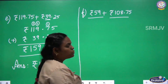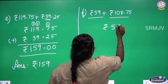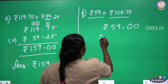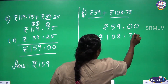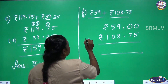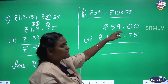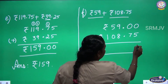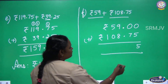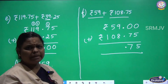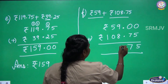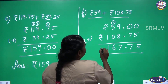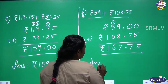Next: 59 Rupees and 108 Rupees 75 Paise. Here they have given only 59 Rupees, no Paise, so write 59.00. Next, 108.75 Paise. We are going to add — write the Plus symbol. Here only Rupees, no Paise, so write 00. What is 0 plus 5? 5. 0 plus 7 is 7. Put the dot. 9 plus 8 is 17 — write 7, 1 carry over. 5 plus 1 is 6, 6 plus 0 is 6, then 1. Write the Rupees symbol. The answer is Rupees 167, 75 Paise.